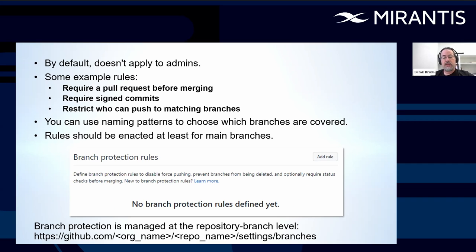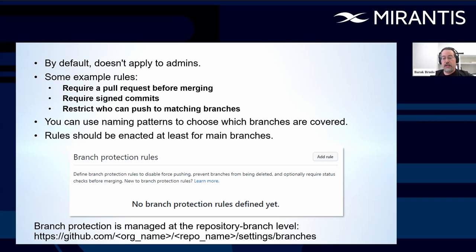You can use naming patterns to choose which branches are covered. For example, if you use asterisk-submit-asterisk, all branches with 'submit' in their name will be covered. The best practice recommendation is that rules should be enacted at least for main branches — the main branch of your repository — but if you have a main branch, at least that one should be protected. Branch protection is managed at the repository branch level: github.com / [org name] / [repo name] / settings / branches. You need to set this up for each repository separately — there are no organization-wide rules.